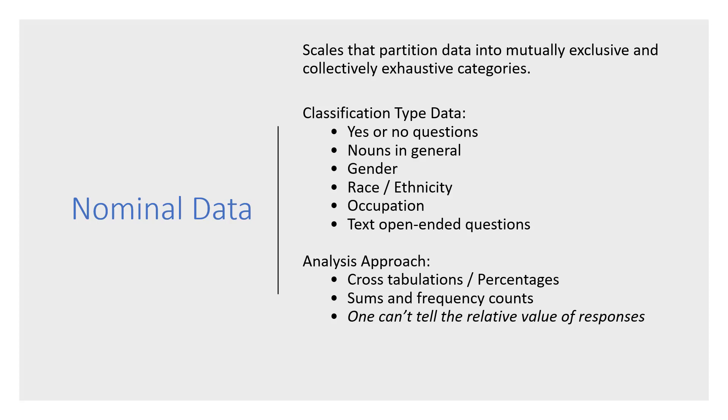The nominal data - scales that partition data into mutually exclusive, collectively exhaustive categories. For example, we sometimes ask people yes or no questions. Usually nominal data includes gender, ethnicity, occupation. Nominal data, typically we can only do percentages, and we can sometimes do cross-tabulations. Cross-tabulation examples: if you look at one variable and you don't see much difference, but if you break down by ethnicity or political affiliation, you begin to see more nuanced interpretations of particular phenomena.